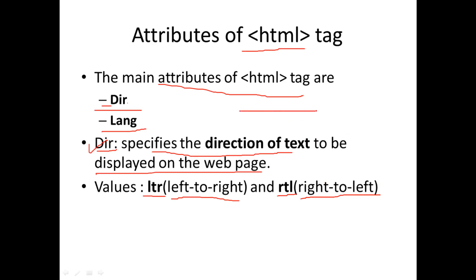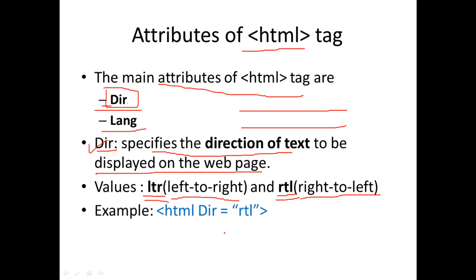The dir attribute specifies whether the text on the HTML web page flows in a left or right direction. To use the dir attribute, the values are ltr for left to right, and rtl for right to left. This is how we use the dir attribute in a normal HTML document.